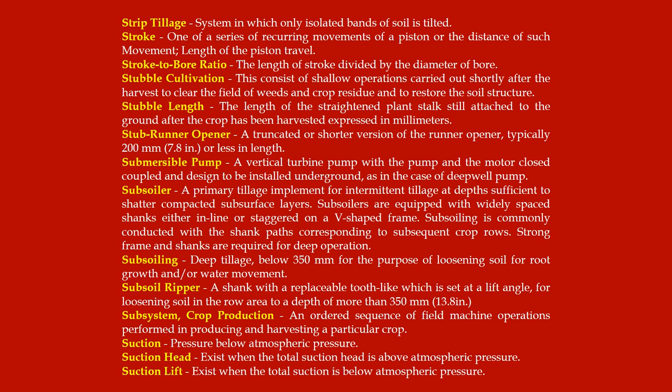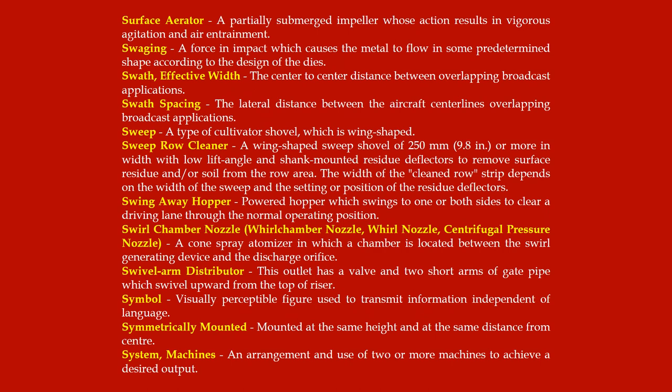Subsystem crop production: an ordered sequence of field machine operations performed in producing and harvesting a particular crop. Suction pressure: below atmospheric pressure. Suction head: exists when the total suction head is above atmospheric pressure. Suction lift: exists when the total suction is below atmospheric pressure. Surface aerator: a partially submerged impeller whose action results in vigorous agitation and air entrainment.